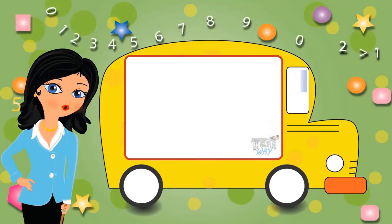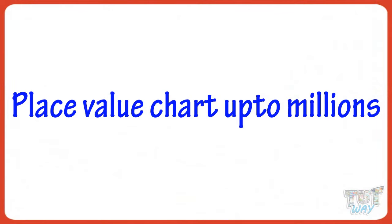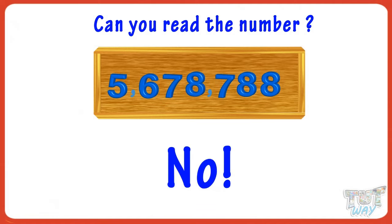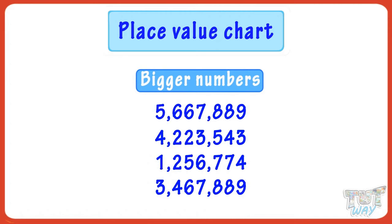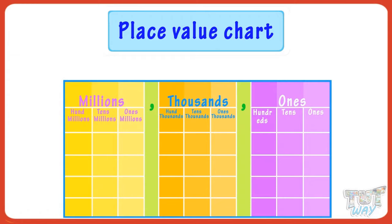Hi kids! Today we will learn the place value chart up to millions. So let's get started. Can you read the number? It's difficult for you right now, so let's learn the place value chart so that we are able to read bigger numbers. Here is our place value chart. Our numbers are divided into three-digit groups called periods.